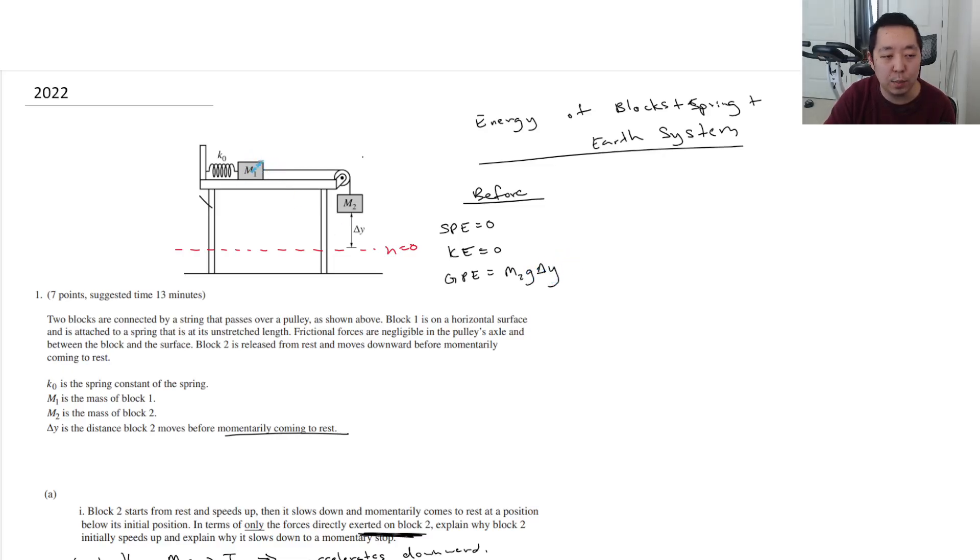And technically, there's some potential energy here. You could call it M1GH if you want. Let's just call that X. We'll just call it M1GX. But hopefully, we're not going to need that M1GX. That potential energy is not going to change. Because basically, when it moves to the right, the spring potential energy is one-half KX squared. But what's the X?